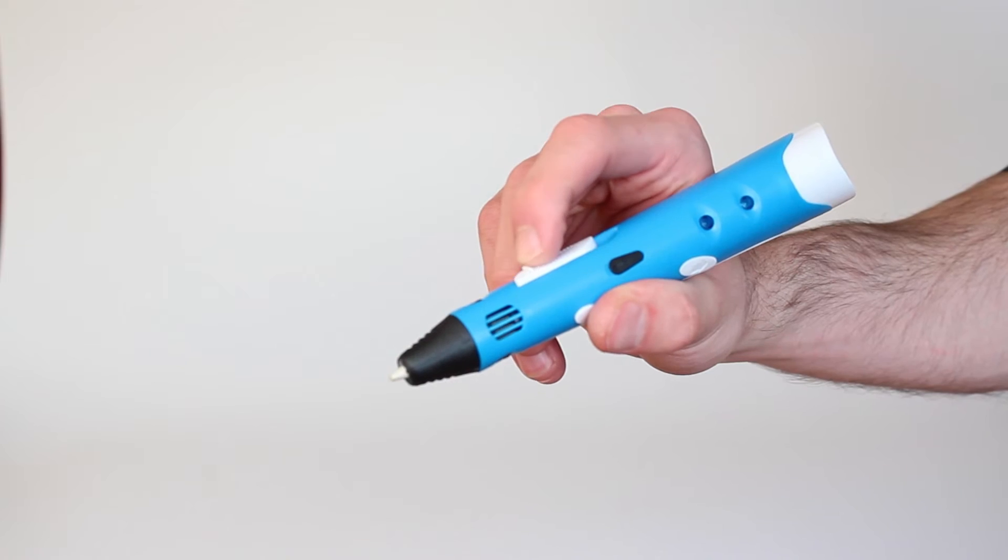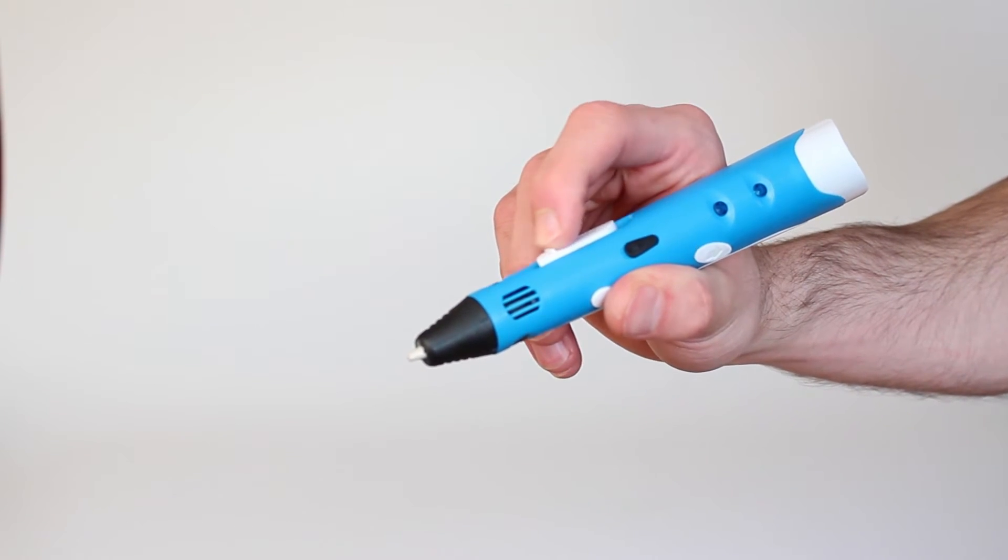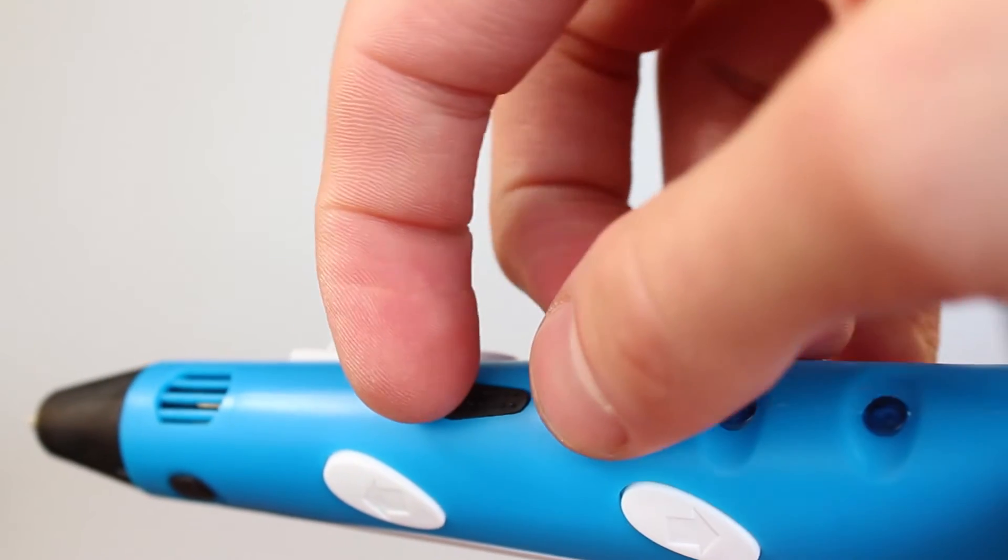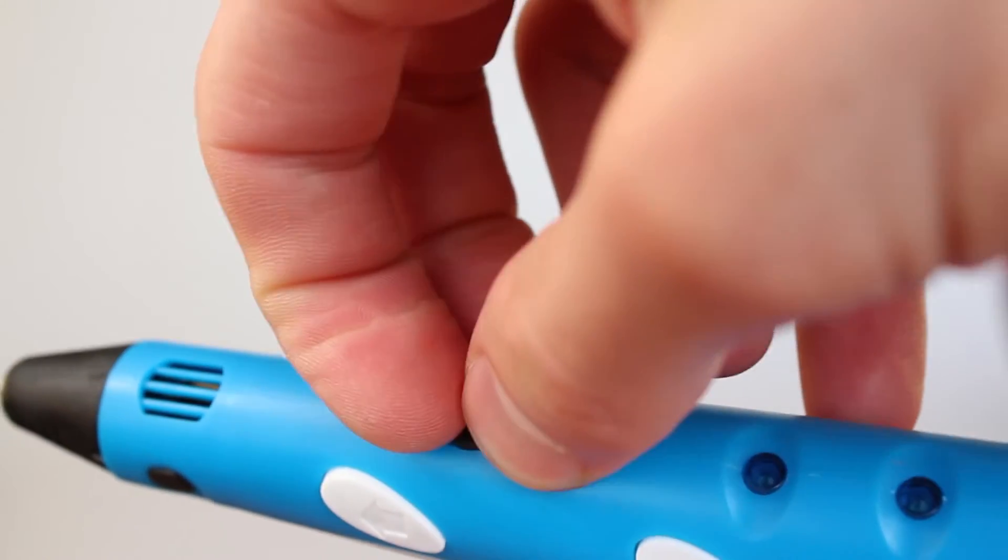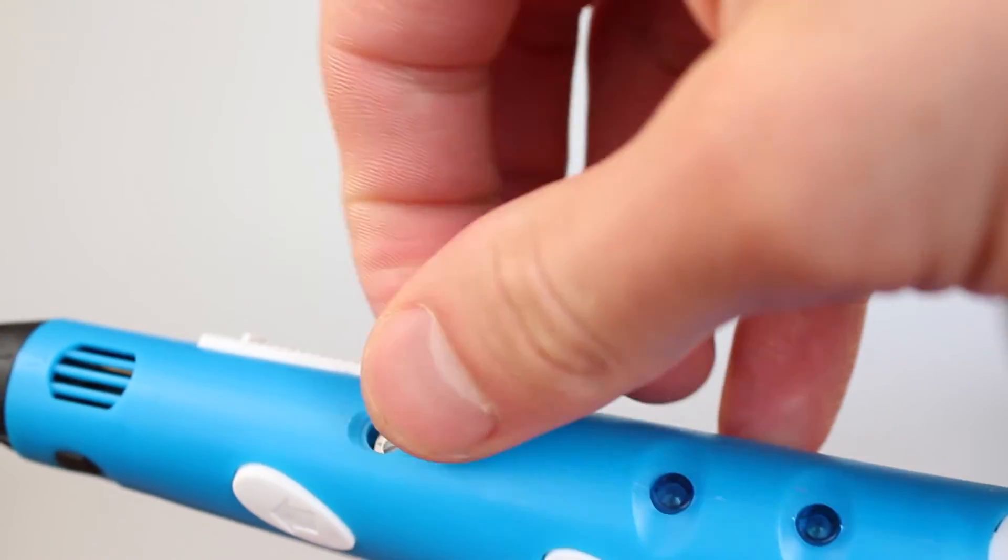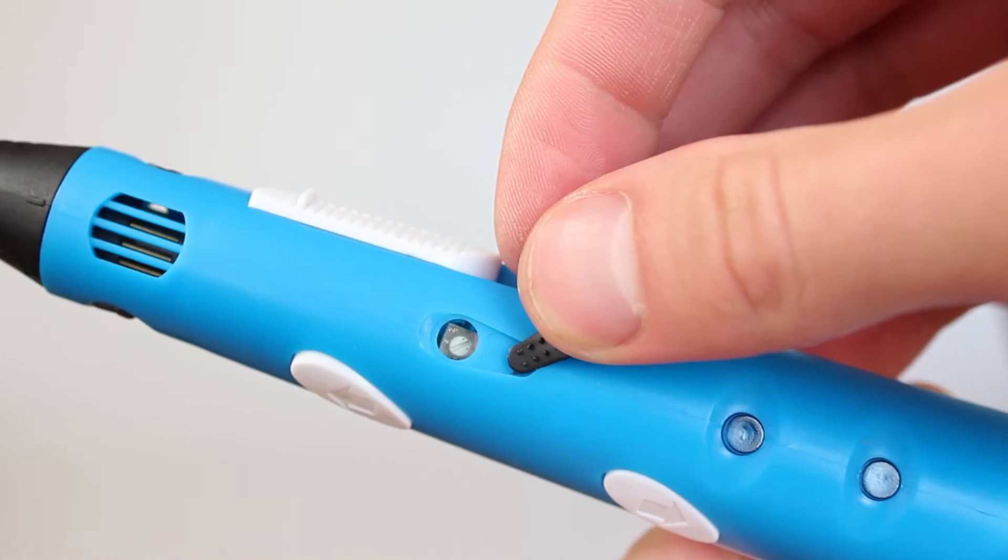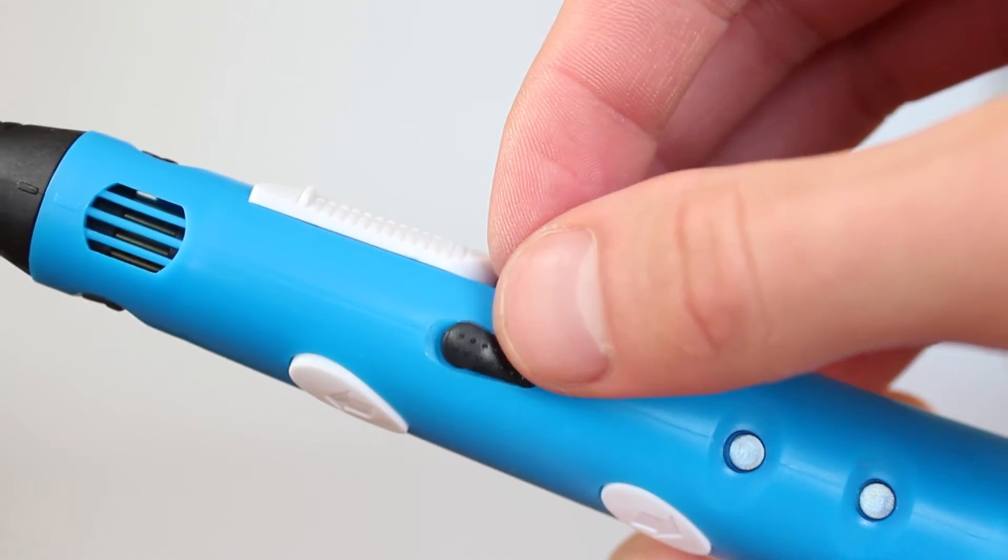Now you are able to change the feeding speed with the slider on the side while you are drawing. However the temperature control is hidden and needs a little screwdriver to be reached. But the temperature is not something you need to fiddle around with too much and is at the right temperature right after unboxing.